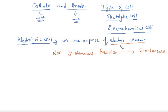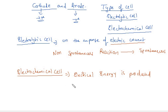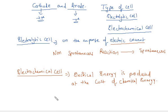So this is basically an electrolytic cell. In this we use an external source of electric current. Whereas the electrochemical cell is a device in which electrical energy is produced at the cost of chemical energy.